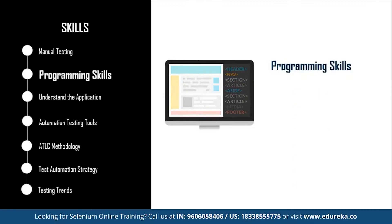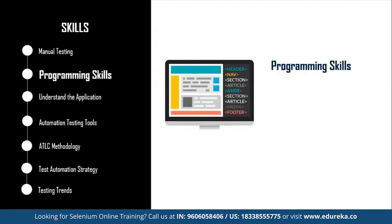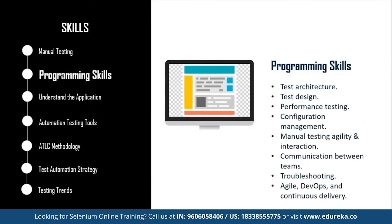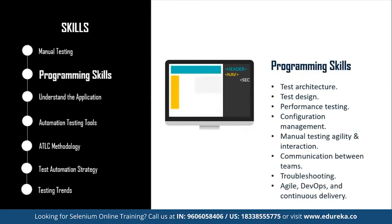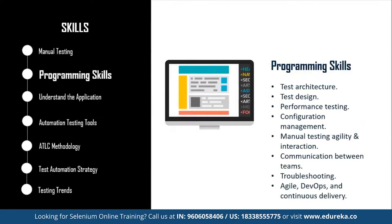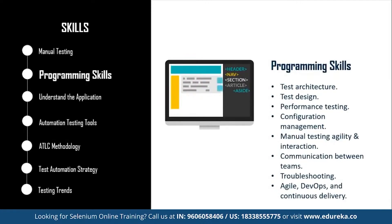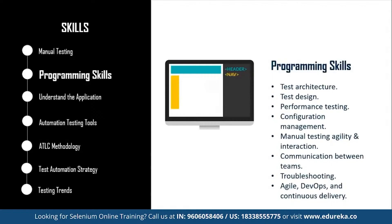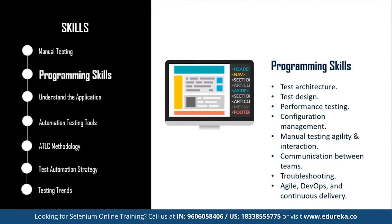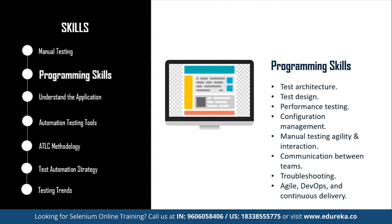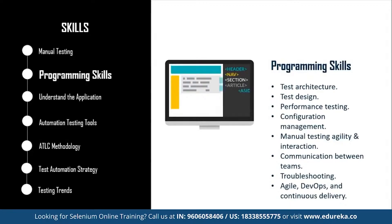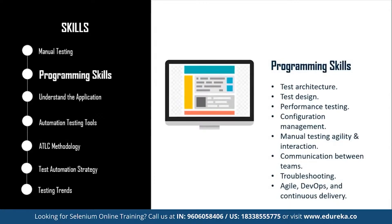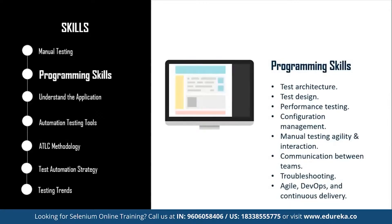There are also a few technical skills a manual tester should master to become a brilliant automation testing engineer, such as test architecture, test design, performance testing, configuration management, manual testing agility, communication between teams, troubleshooting, agile DevOps, and continuous delivery. The combination of all these skills can help you transition to automated testing easily and smoothly.